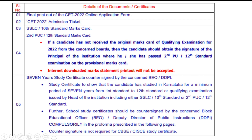Counter-signature is not required for CBSE or ICSE study certificates. For CBSE and ICSE students, only the principal's signature on the study certificate and marks card is sufficient — you do not need BEO or DDPI countersigning. So these are the first 5 mandatory documents.